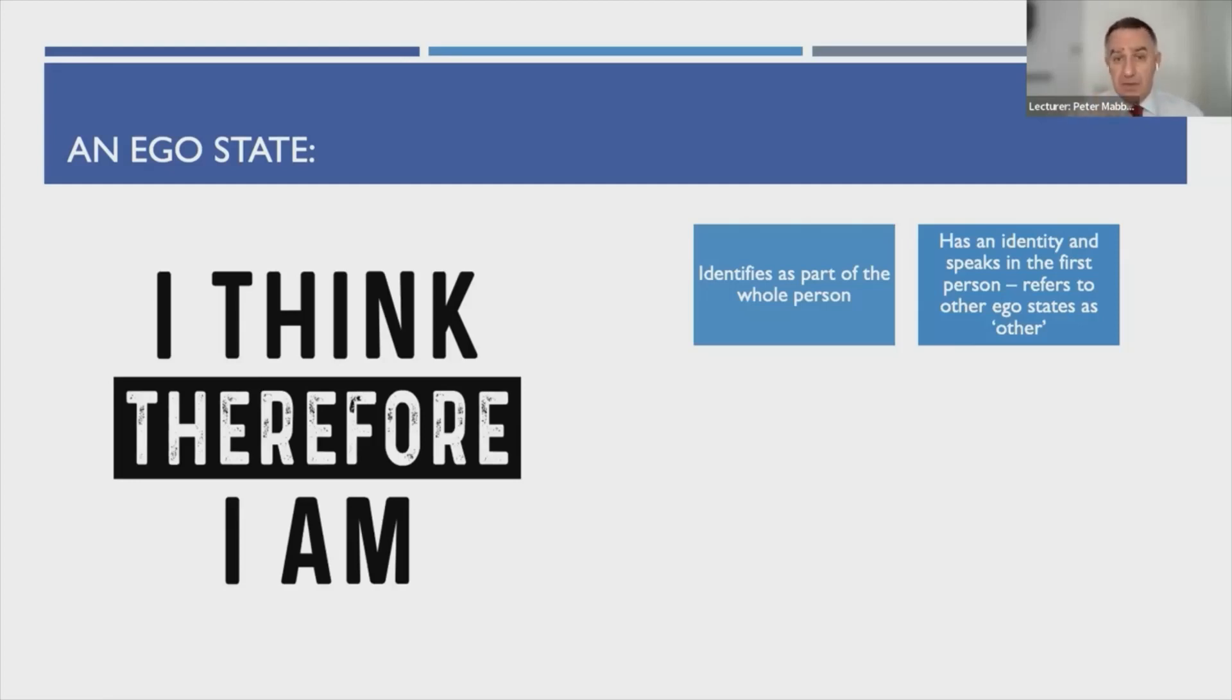When they refer to other ego states, in ego state therapy, you name them or you don't—the ego state names itself. For example, I might have an ego state who identifies as Happy, talking about an ego state identified as Jack. The Happy ego state will say, 'Jack says that,' or 'I feel Jack doesn't like what I do.' Again, I really want to emphasize that the ego state identifies as part of the whole person.